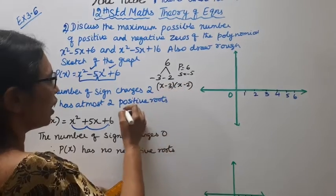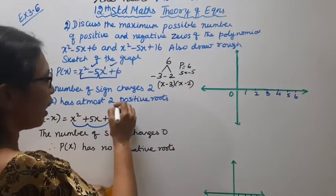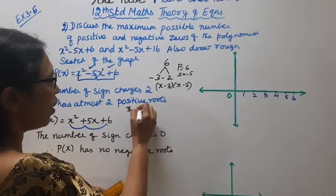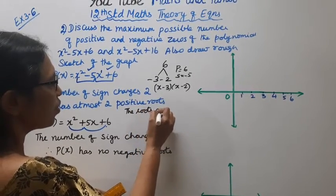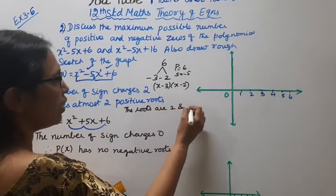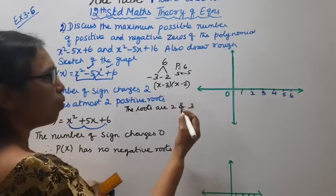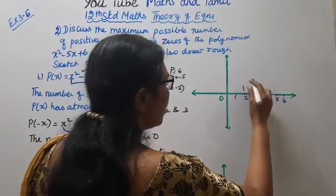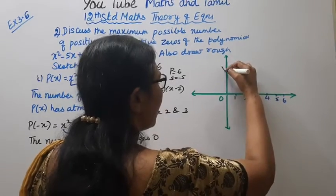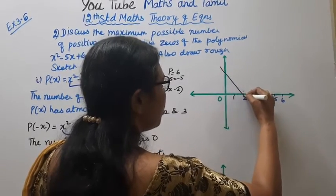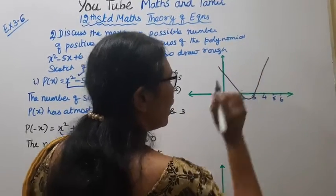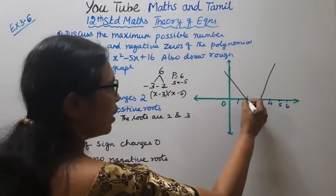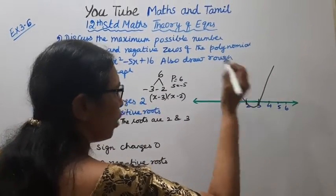Now here we have the roots. P(x) has at most 2 positive roots. The roots are 2 and 3. Now here we have the graph with roots at x = 2 and x = 3.